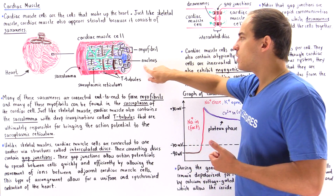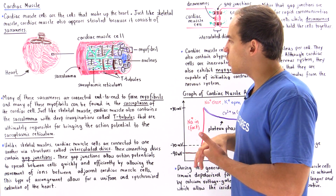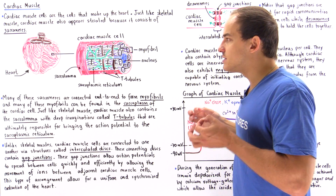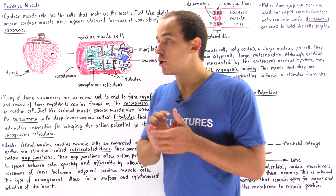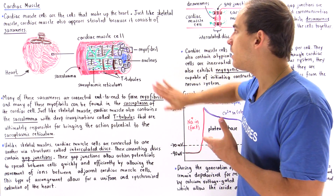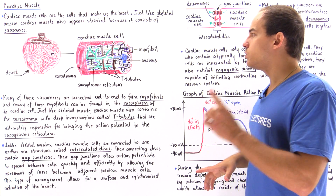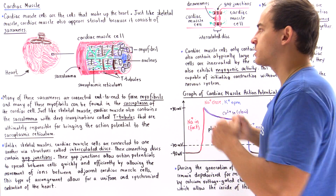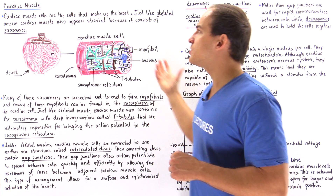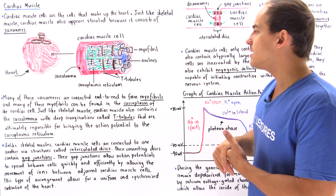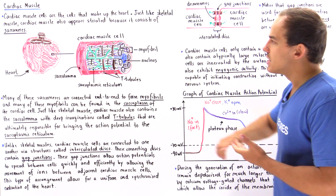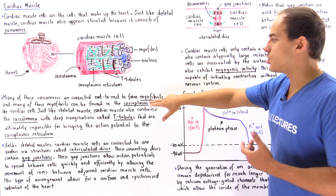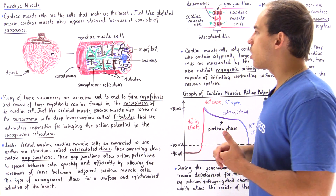We also have a nucleus, shown in blue. But unlike skeletal muscle, which contains many nuclei per cell, the cardiac muscle cell contains only a single nucleus. This is the first important difference between cardiac muscle cells and skeletal muscle cells.